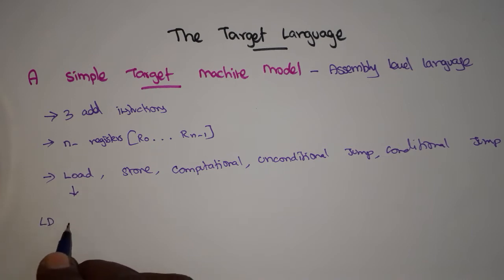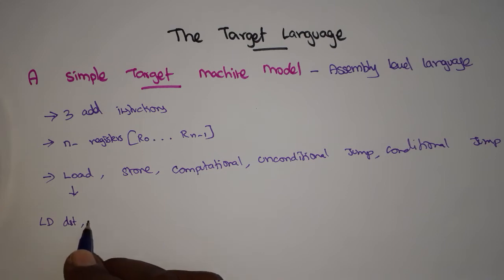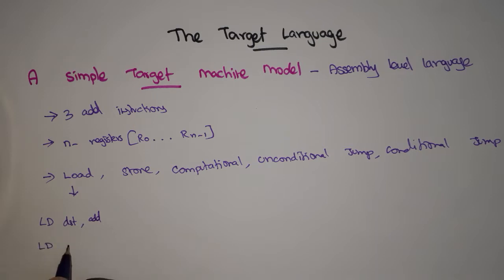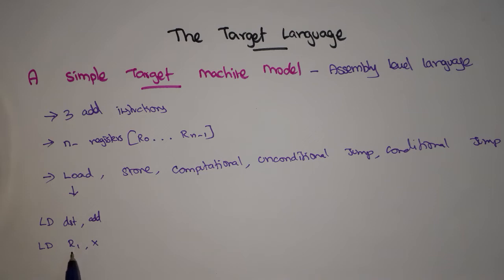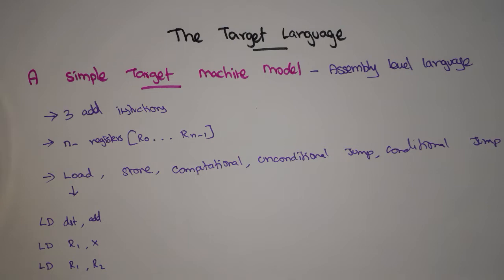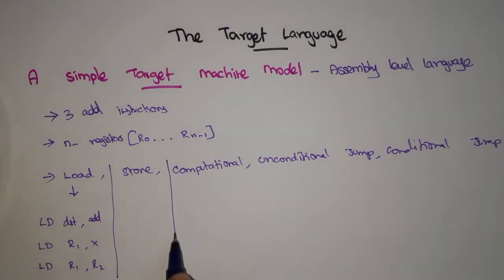Load instruction is used to load a value into a register. The form is: LD destination, source_address. For example, LD R1, X means the value at memory address X is moved into register R1. Another form is LD R1, R2, meaning the value in R2 is moved to R1. So load instruction loads a value into a register.